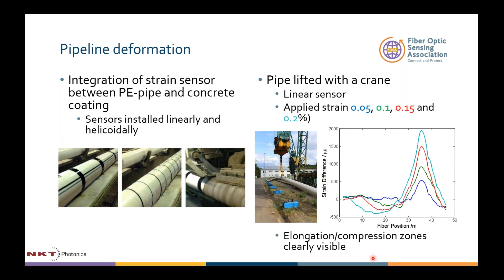The first example is measurement of pipeline deformation. A strain sensor was integrated between the polyethylene pipe and the concrete coating — one sensor longitudinally, another coiled around the pipe — and then concrete coating was applied. The length of pipe was then lifted with a crane. As expected, the fiber on top was under compression in the supported area and under traction elsewhere. With the measurement system, that is exactly what was observed: as applied strain increased, we saw more compression in the compression zone and higher deformation on the upper part of the curve, confirming measurement of strain in both directions.